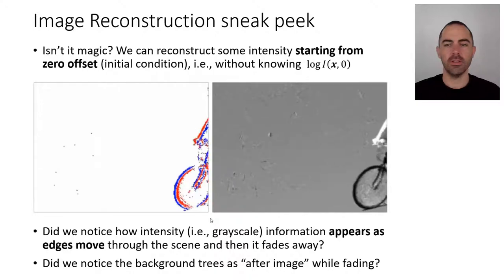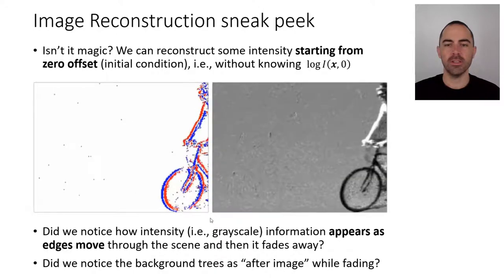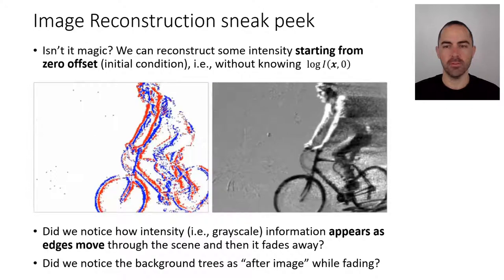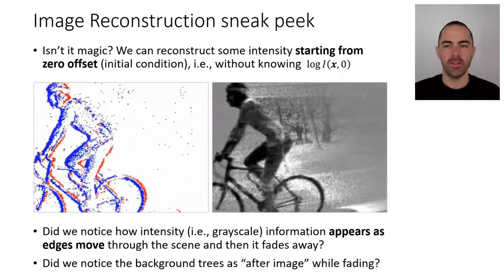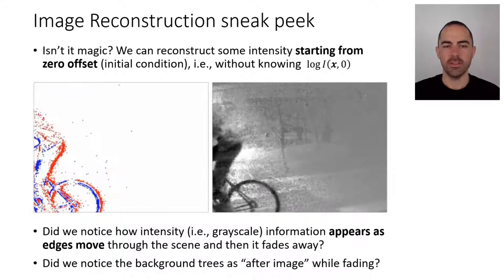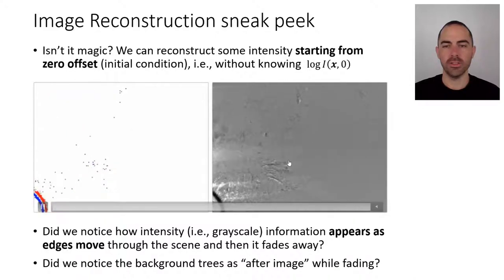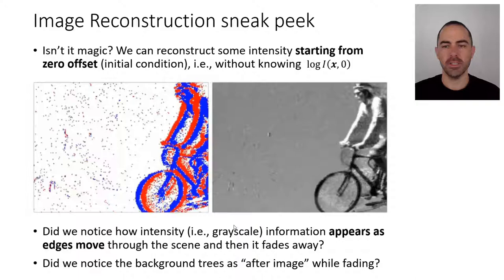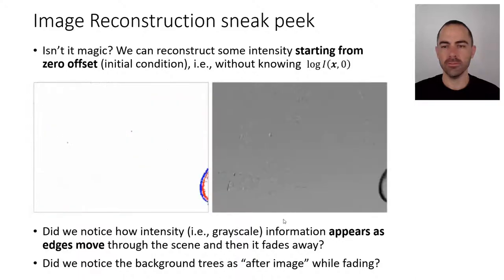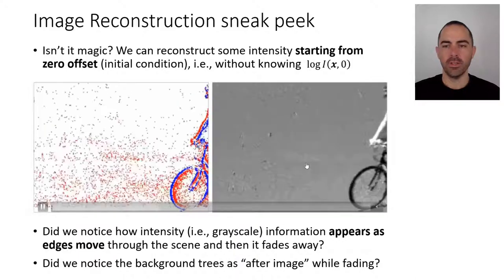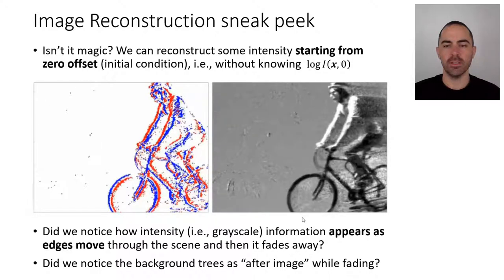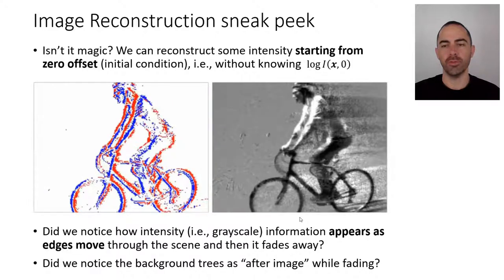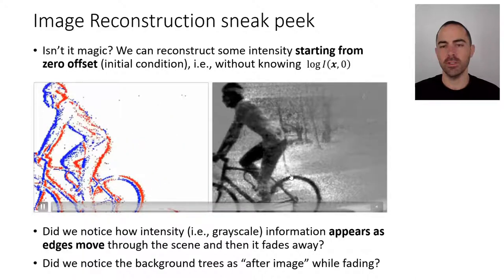But nevertheless we are able to obtain somehow to recover the absolute intensity. And not only that we can also recover as you can see in the video at high speed. We can slow down the video so we create a video or images that they inherit the properties from the events such as that they are high speed and that they are high dynamic range.